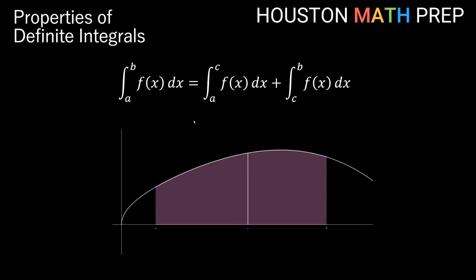Another property: if I want to find the area from a all the way to b under some function, and there is some c in between a and b, then the total area equals the area from a to c plus the area from c to b added together.